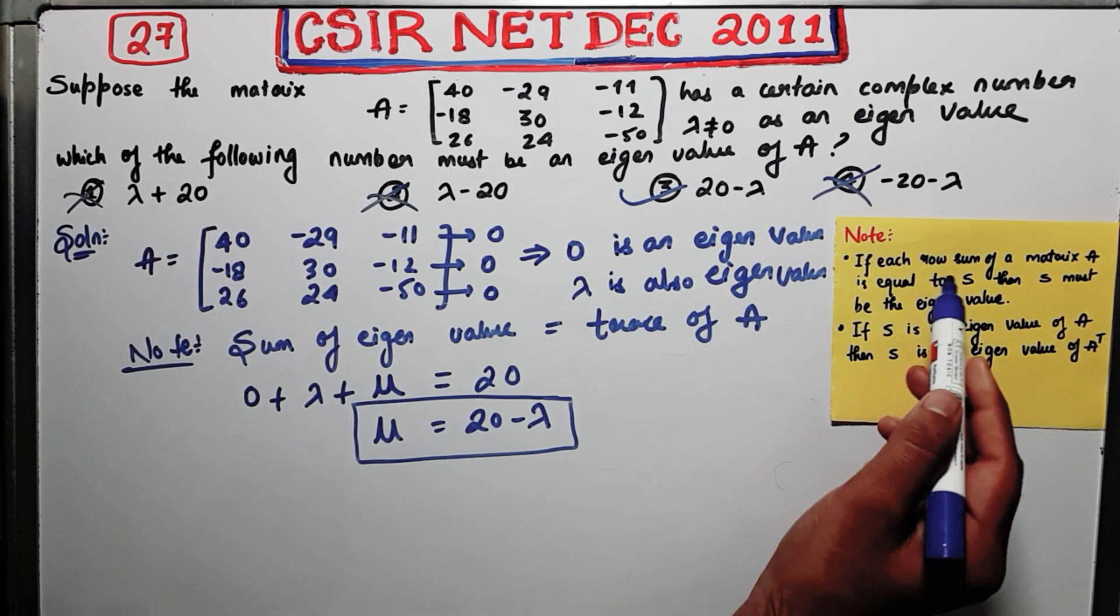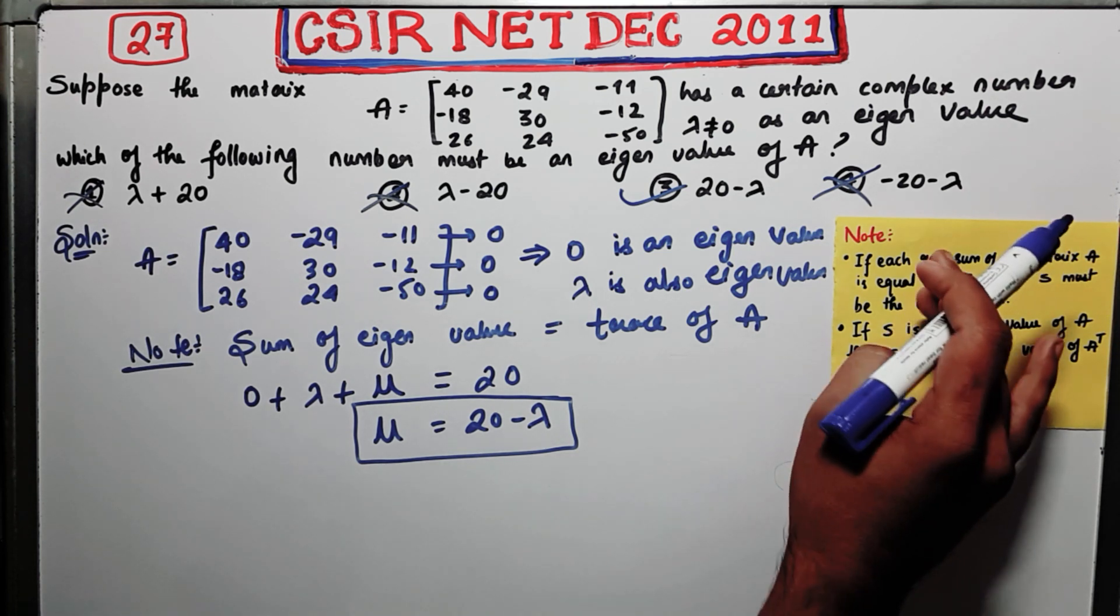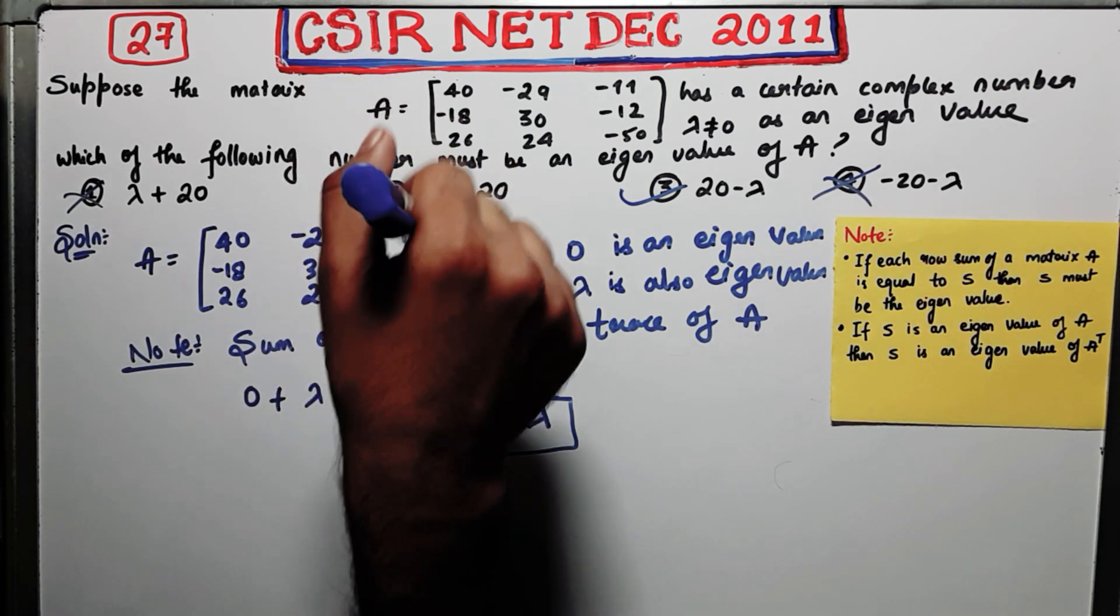Totally dependent on this note, that if each row sum is equal and it is equal to some number S, then that number is an eigenvalue. This also happens for the case of column also.